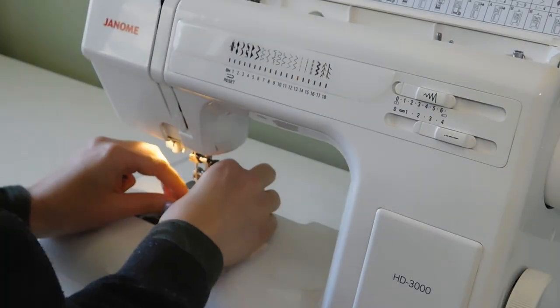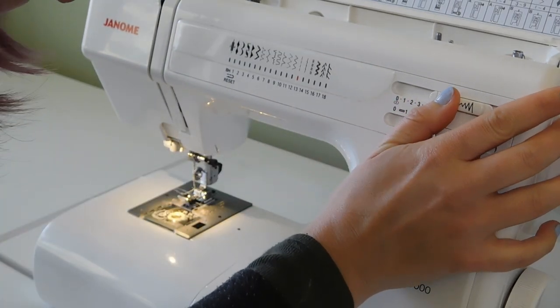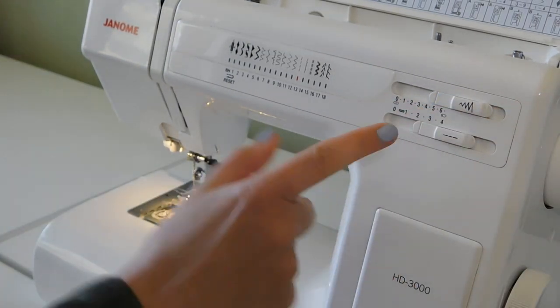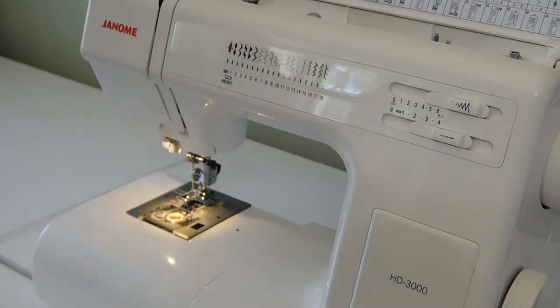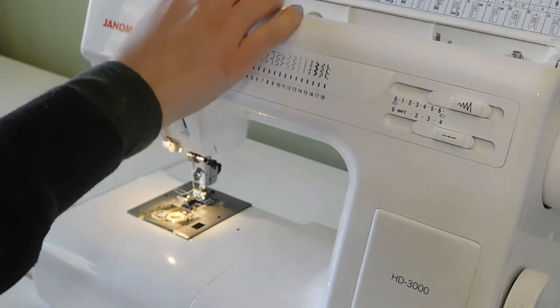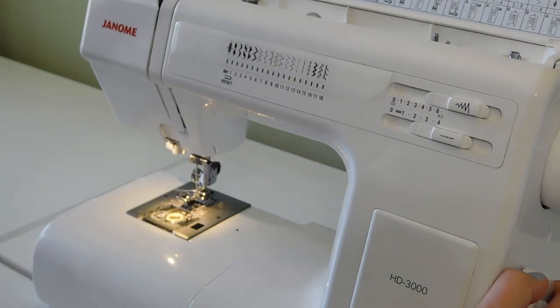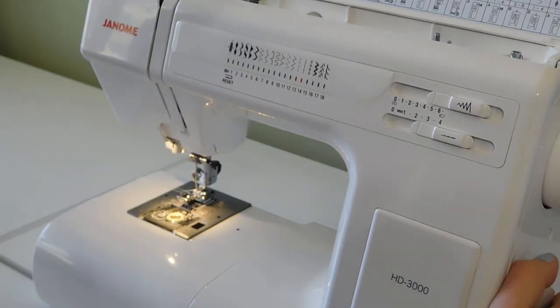Now I'm going to test out a feature on the Janome HD3000 called the Overcast Stitch. This is essentially a way to create a clean edge without french seams or an overlock machine. So I switch my presser foot to the C foot, I change the stitch width to 5, I change the stitch type to 18, and finally I change the tension to 5.